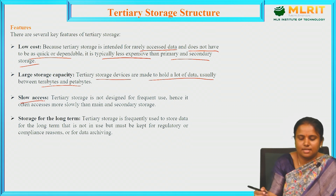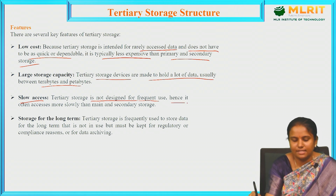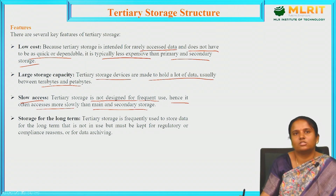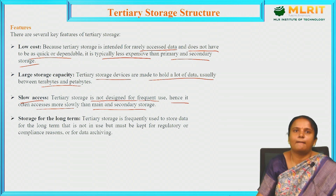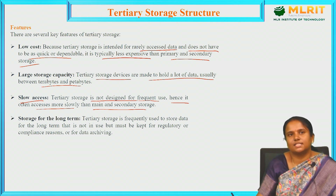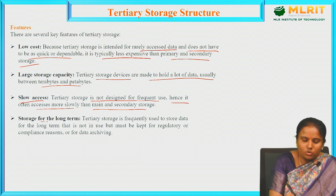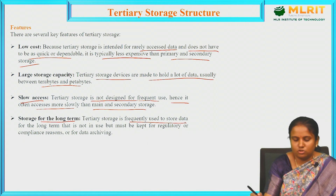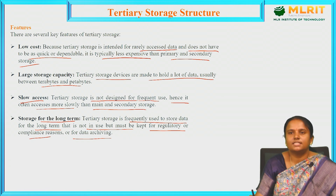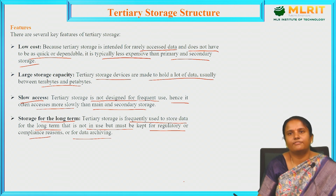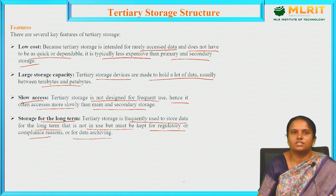Regarding slow access: tertiary storage is not designed for frequent use, hence it is often slower than primary and secondary storage devices. Regarding storage for the long term: tertiary storage is frequently used to store data that is not actively used but must be kept for regulatory or compliance reasons or for data archiving.